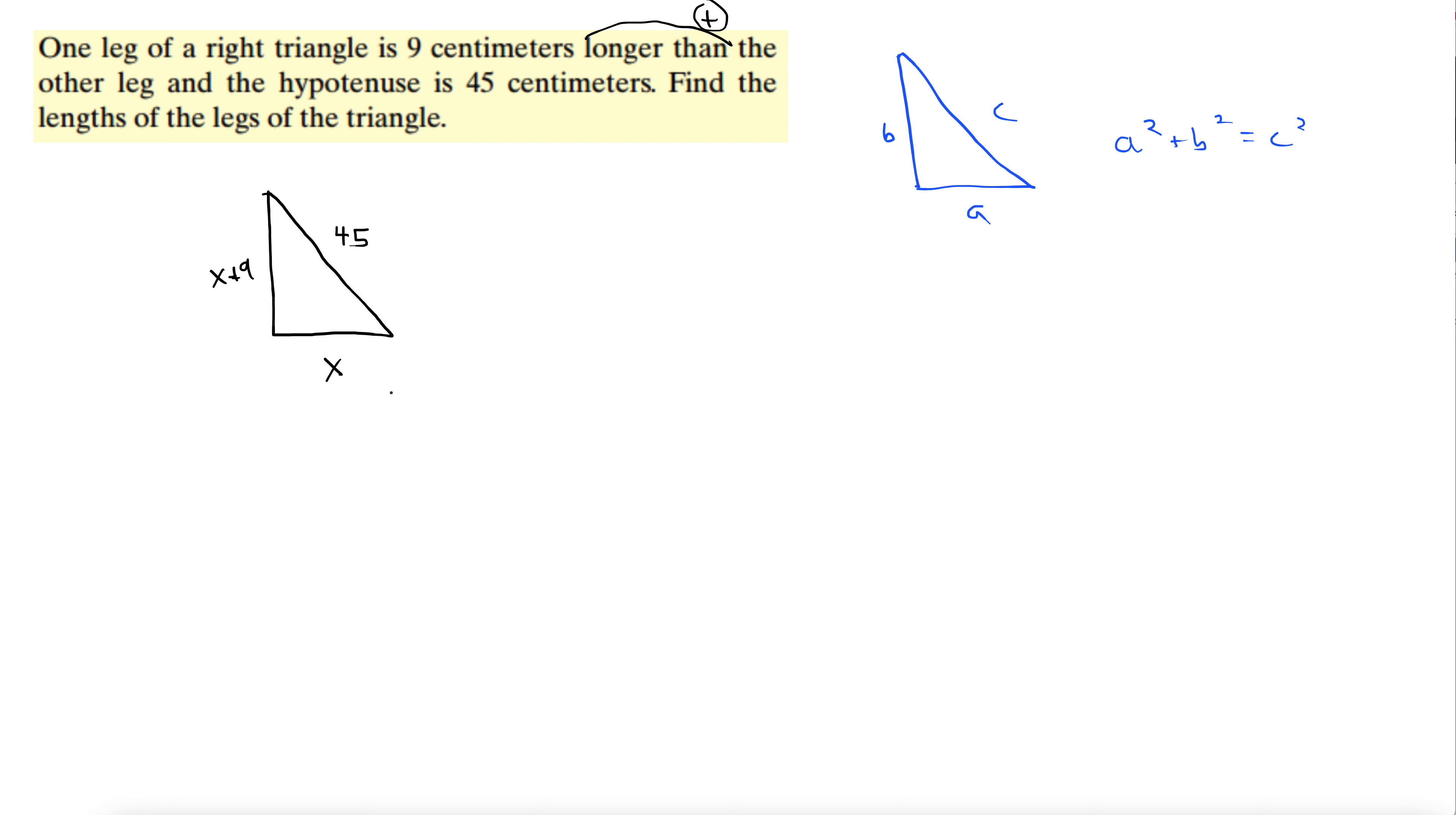And it gives us the hypotenuse, 45. Now we can forget about the words for now. Now we work off this figure. This is a right triangle. By the way, this works off a right triangle only. So let's hit it with the Pythagorean theorem. a squared plus b squared equals c squared. x squared plus x plus 9 squared equals 45 squared.